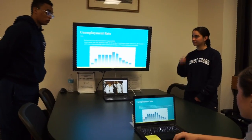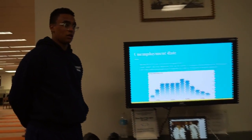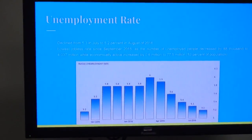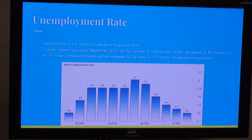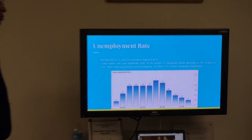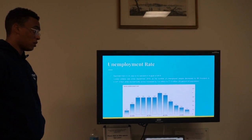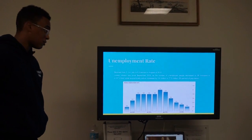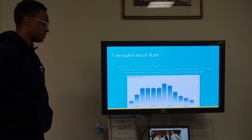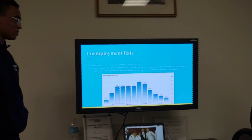Let's talk about the unemployment rate in Russia. Something we've learned in macroeconomics is that the unemployment rate isn't necessarily always a bad thing — you have to delve into it deeper to completely understand. It's declined from 5.3% to 5.2% in a singular month, which is pretty incredible. That's the lowest jobless rate since September of 2015. The number of unemployed people decreased by 88,000 to 4.037 million, while economically active increased by 0.6 million to 77.5 million.